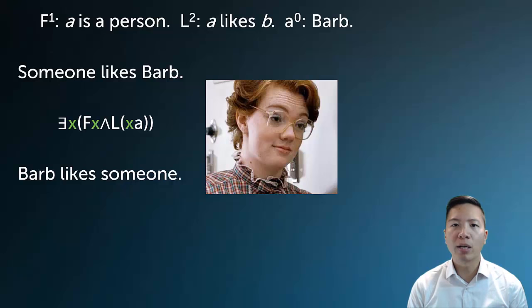What about Barb likes someone? Well, we actually have to say the same thing. We have to say there is someone, and Barb likes that person. So the difference here is that in the L predicate, instead of it saying XA, it says AX. And this is an example where order matters, and the order actually dictates the true meaning of the sentence.